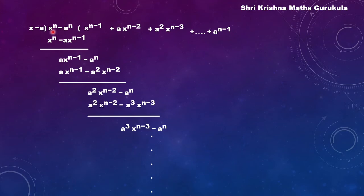So we can write x to the power n minus a to the power n as the product of x minus a and the sum x to the power n minus 1 plus x to the power n minus 2 into a plus x to the power n minus 3 into a squared, continuing to the last but one term x into a to the power n minus 2, plus a to the power n minus 1. We will be using this factored form in the proof.